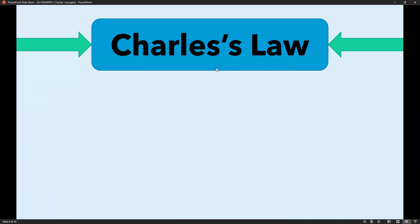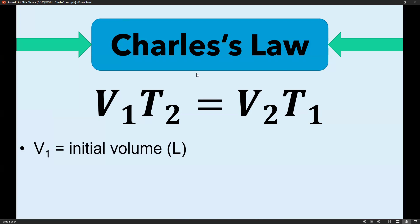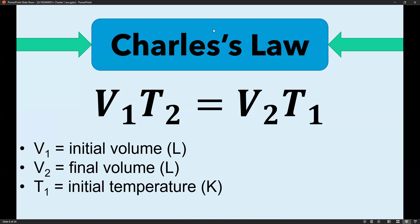Let's move to the mathematical relationship between volume and temperature at constant pressure. We use the formula V₁T₂ = V₂T₁. V₁ stands for initial volume with standard unit liter represented by capital L. V₂ stands for final volume also in liters. T₁ refers to initial temperature with standard unit Kelvin, while T₂ refers to final temperature also in Kelvin.